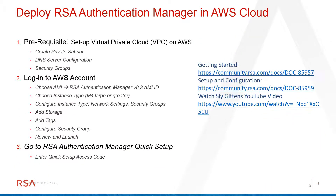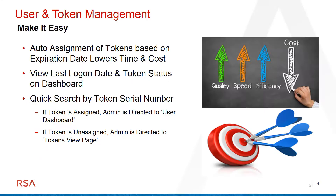To learn more about putting Authentication Manager in the cloud, take a look to the right — there's a getting started guide and a setup and configuration guide. Or if you're a visual learner, watch the video on YouTube about integrating RSA Authentication Manager 8.3 on AWS. Now let's go to number two: auto assignment of tokens based on expiration dates.